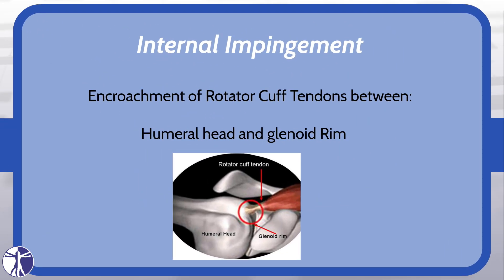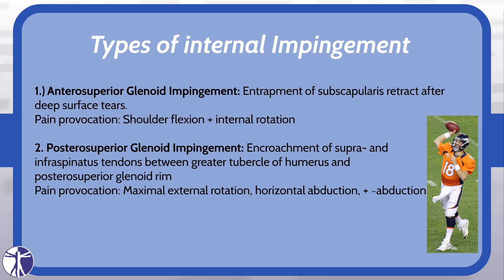Internal impingement describes an encroachment of the rotator cuff tendons between the humeral head and the glenoid rim. Based on the location of this encroachment, there are two types: antero-superior and postero-superior glenoid impingement.